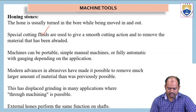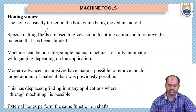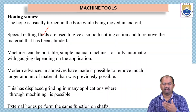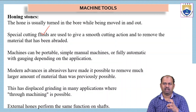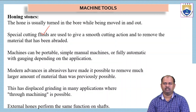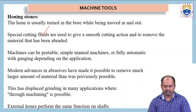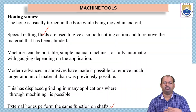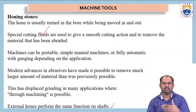Machines can be portable, simple manual machines, or fully automatic, depending on the application. Modern advances in abrasives have made it possible to remove much larger amounts of material than was previously possible, displacing grinding in many applications. Grinding wheels cannot go inside a bore, so where internal surface finishing is needed, honing is used. External hones perform the same function on shafts.